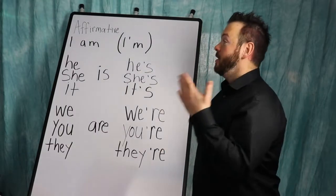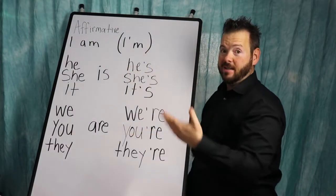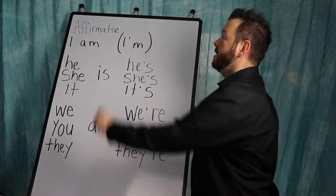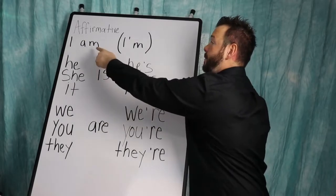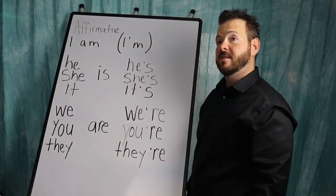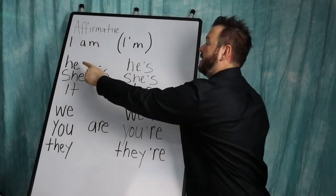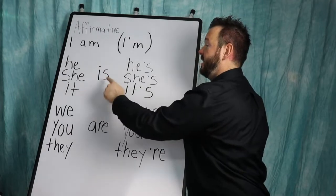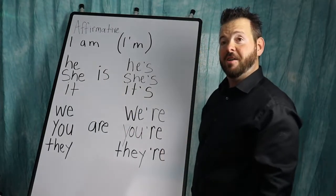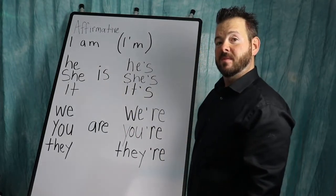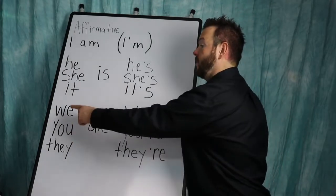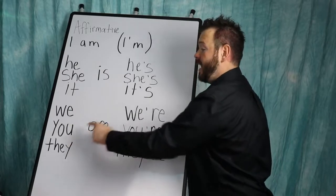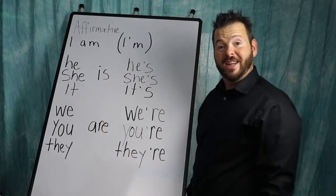Okay, so we're talking about am, is, and are as I just mentioned in the affirmative. So listen: I am, repeat. He is, she is, it is. Repeat it to yourself. We are, you are, they are. Repeat it to yourself.